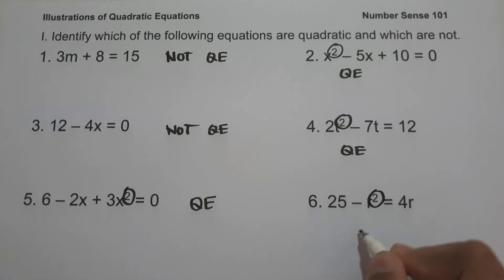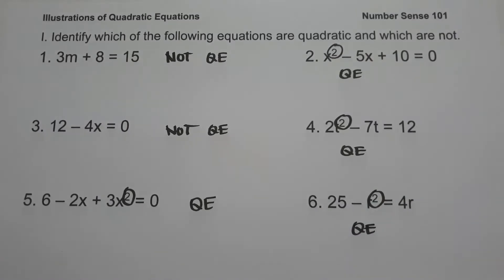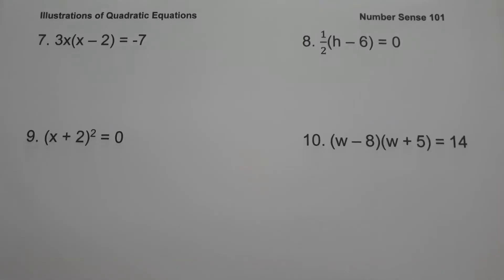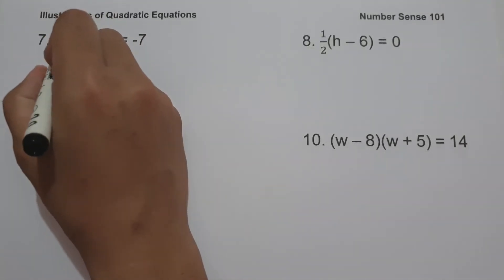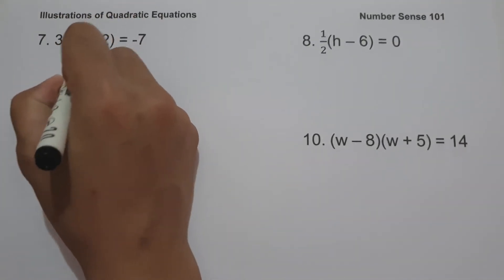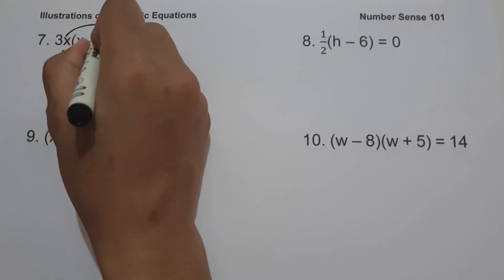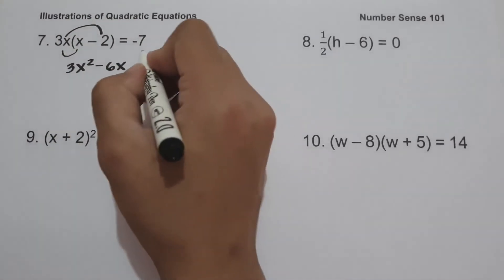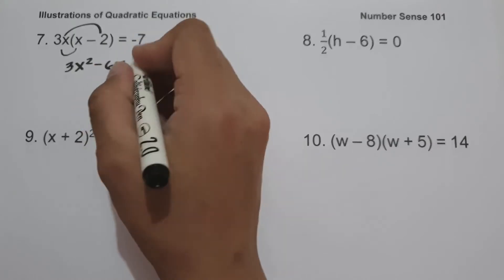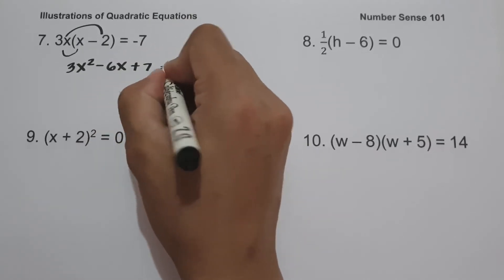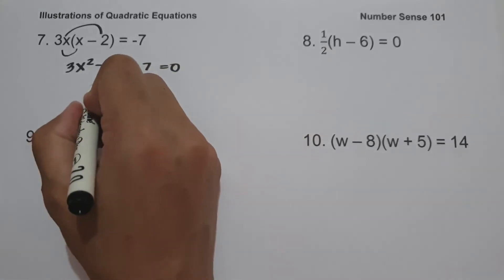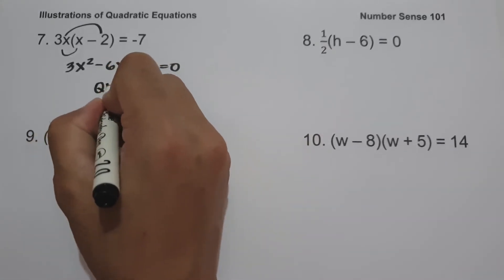On number six, we have 25 minus r squared equals 4r. The highest exponent is two, so we have a quadratic equation. On number seven, we have 3x times the quantity (x minus 2) equals negative 7. If we simplify, 3x times x is 3x squared, and 3x times negative 2 is negative 6x. Moving negative 7 to the other side gives positive 7, so this is a quadratic equation because the highest exponent is two.